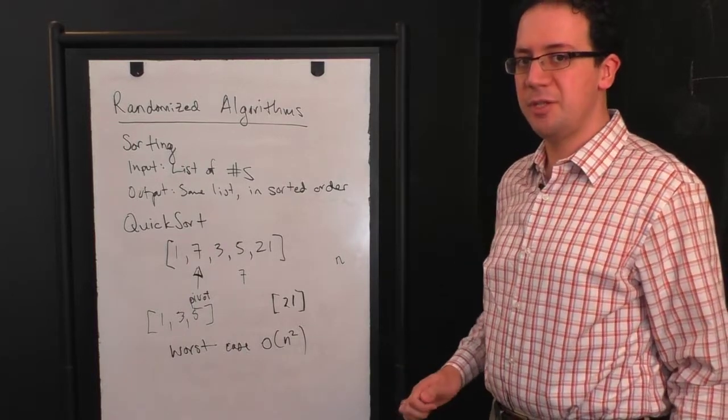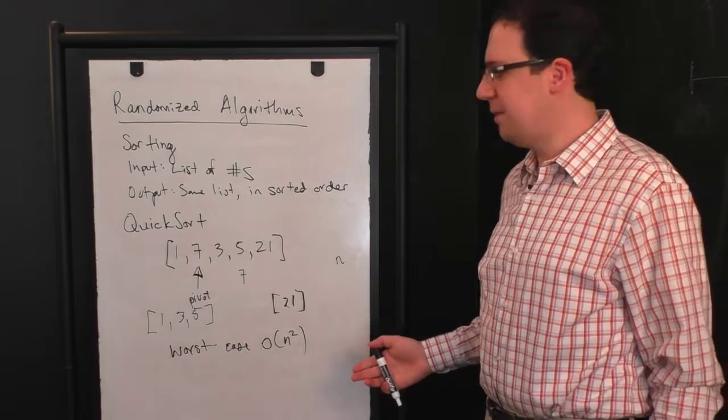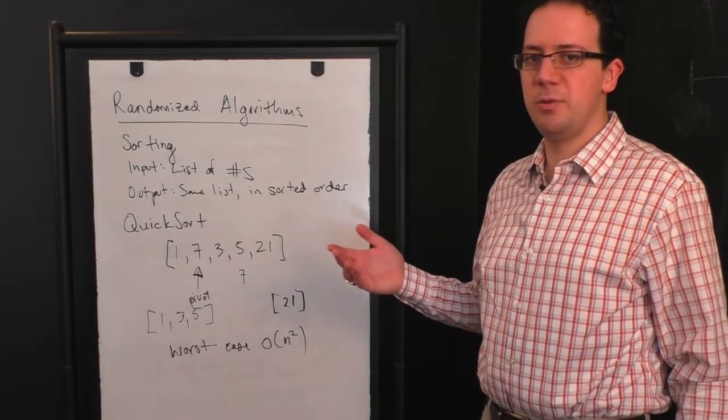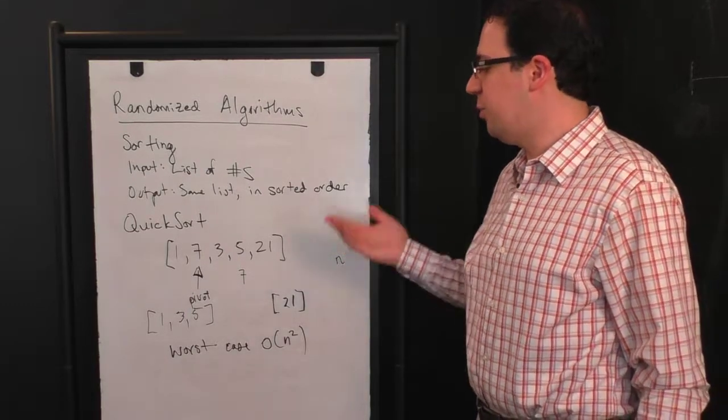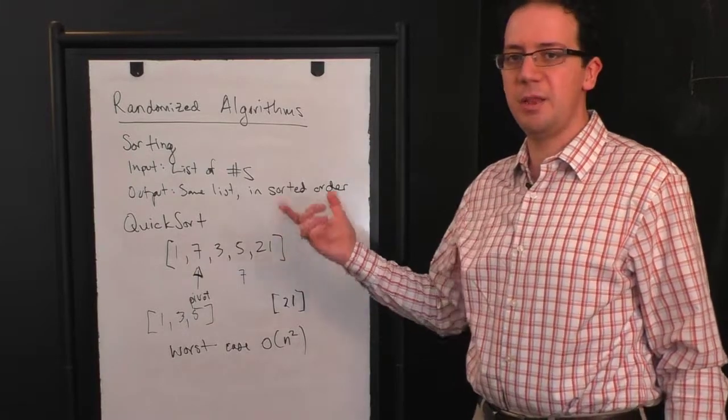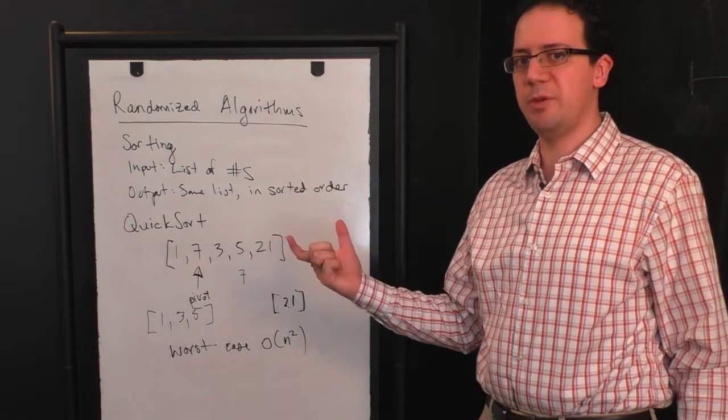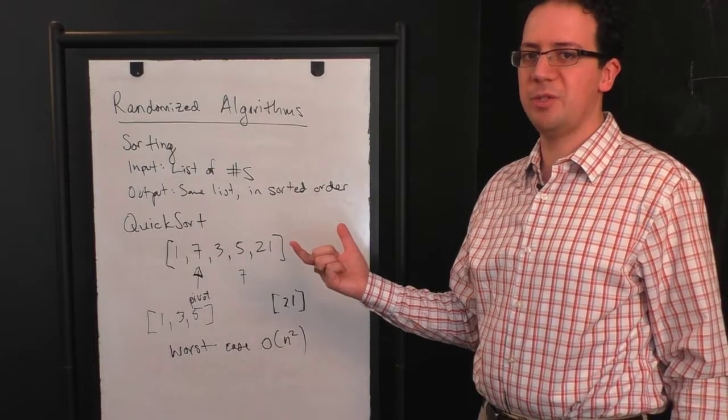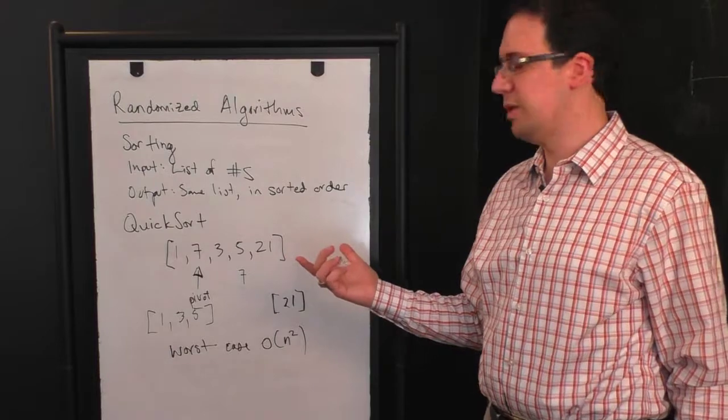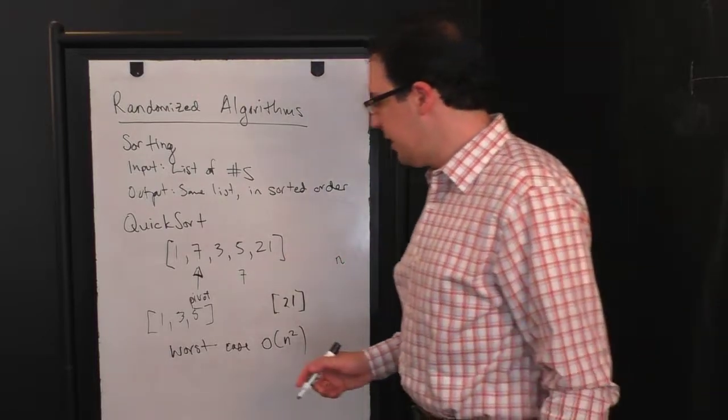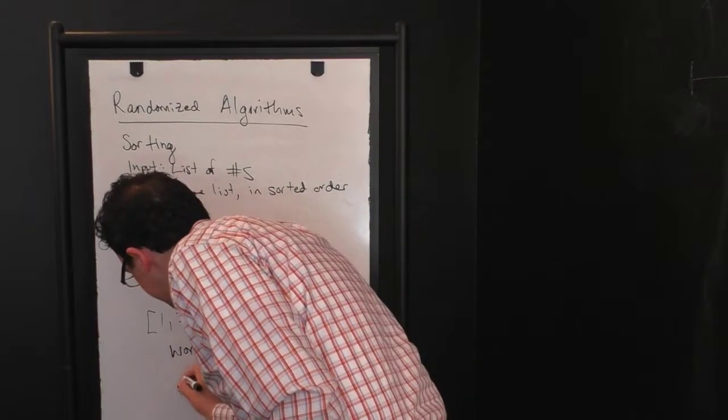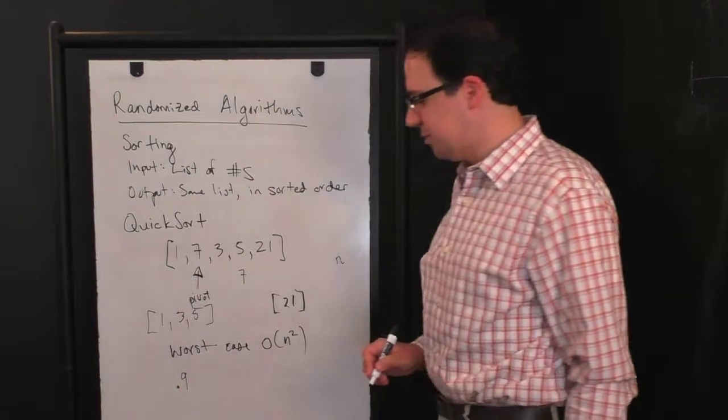But on average, this is really not expected to happen. Because for example, you might hope that your pivot is in the middle 90% of the numbers. What's the probability that it's in the middle 90% of the numbers? 90%. Pretty simple. So the probability that your pivot is in the middle 90% of your numbers is 90%. That's pretty good.